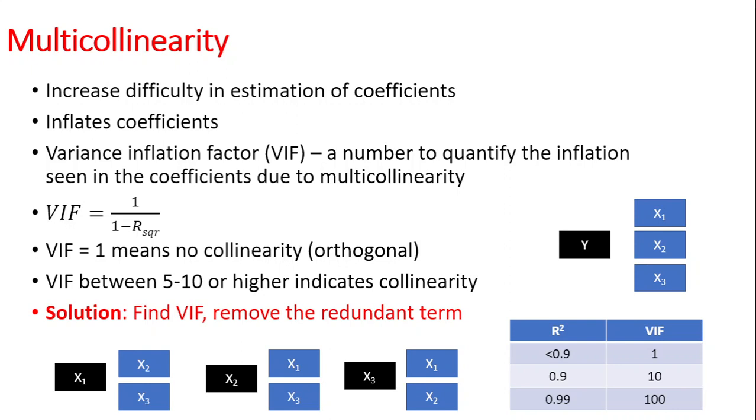Collinearity is a redundant term which influences the model and inflates the coefficient or parameter estimates that we make, and sometimes it can also make it difficult to estimate the current value of these coefficients.